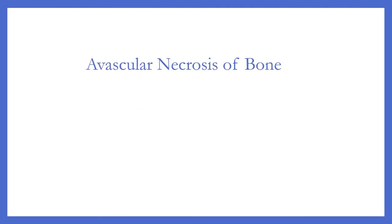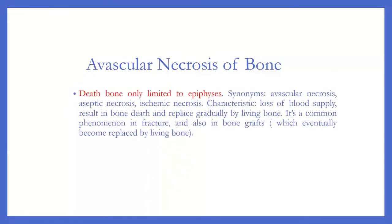Avascular necrosis of bone — bone death limited to the epiphysis — has several synonyms: avascular necrosis, aseptic necrosis, and ischemic necrosis. Its characteristic feature is loss of blood supply, resulting in bone death which is gradually replaced by living tissue.